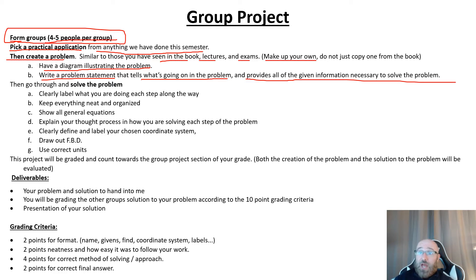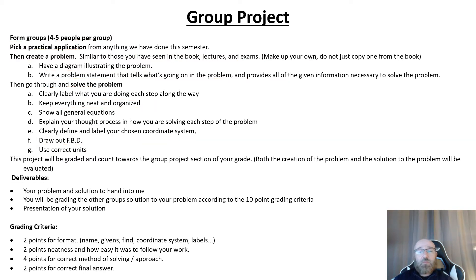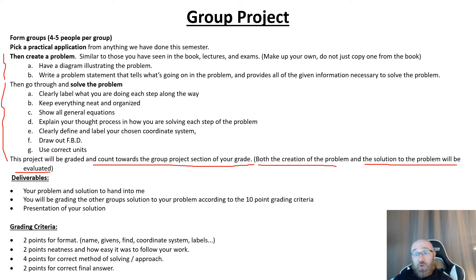Part two of the assignment, due this week within Module 12, is to go through and solve your problem. You're going to turn in the problem that you created and your solution to that problem. The grading rubric is based upon: did you clearly label what you're doing each step along the way? Is everything neat and organized? Did you show all the general equations? Did you explain your thought process for each step? Did you clearly define and label your chosen coordinate system? Did you draw free body diagrams if necessary? And did you use the correct units? Both the creation of the problem and the solution will be evaluated, and a rubric is available on Blackboard.